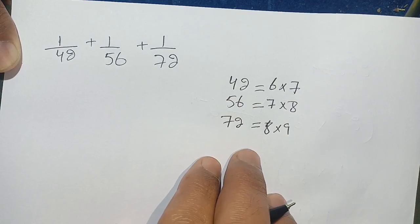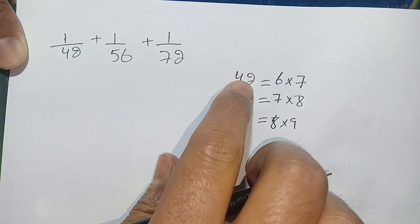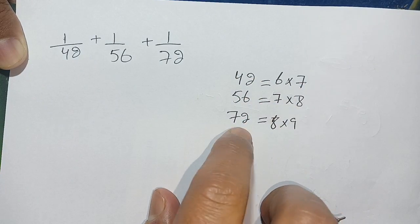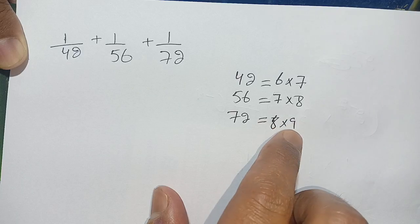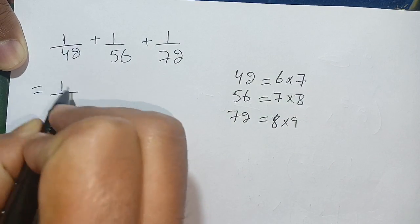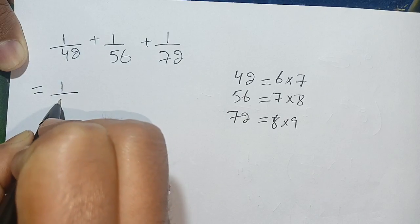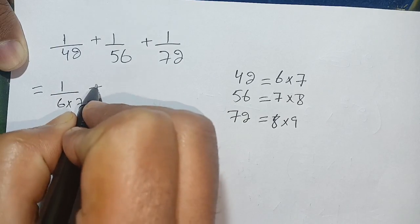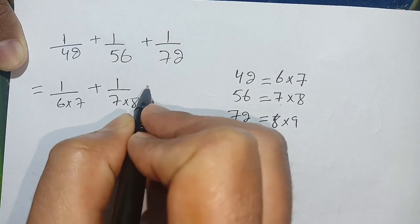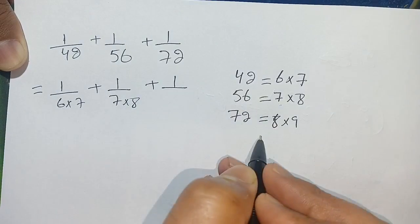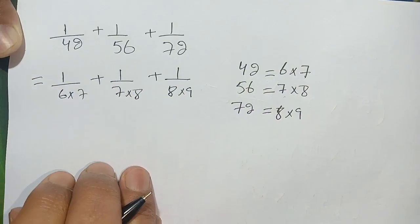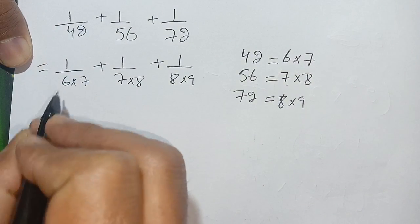Now, replacing 42 by 6 times 7, and 56 by 7 times 8, and 72 by 8 times 9, our terms become: 1 divided by 6 times 7, plus 1 divided by 7 times 8, plus 1 divided by 8 times 9.